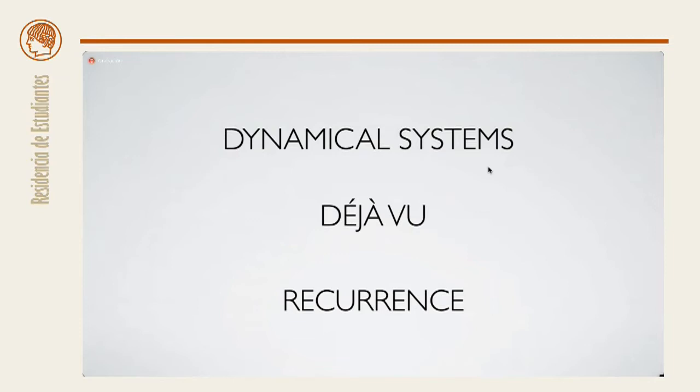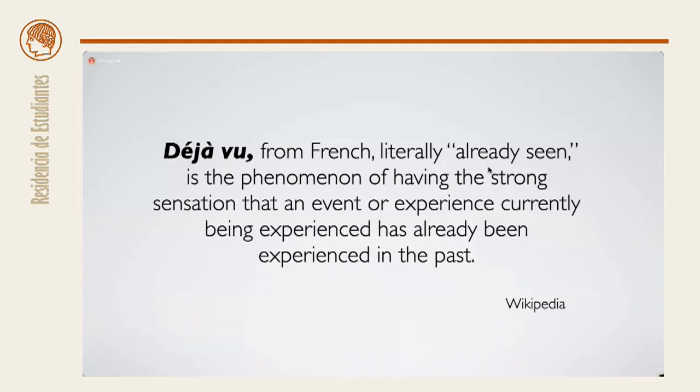Scientists answer questions like these using techniques from a field called dynamical systems. All of the questions that I've just stated concern a mathematical version of déjà vu, which is called recurrence. The phrase déjà vu translates literally from the French, already seen. It describes the psychological sensation of having seen something before, but not being sure exactly when.